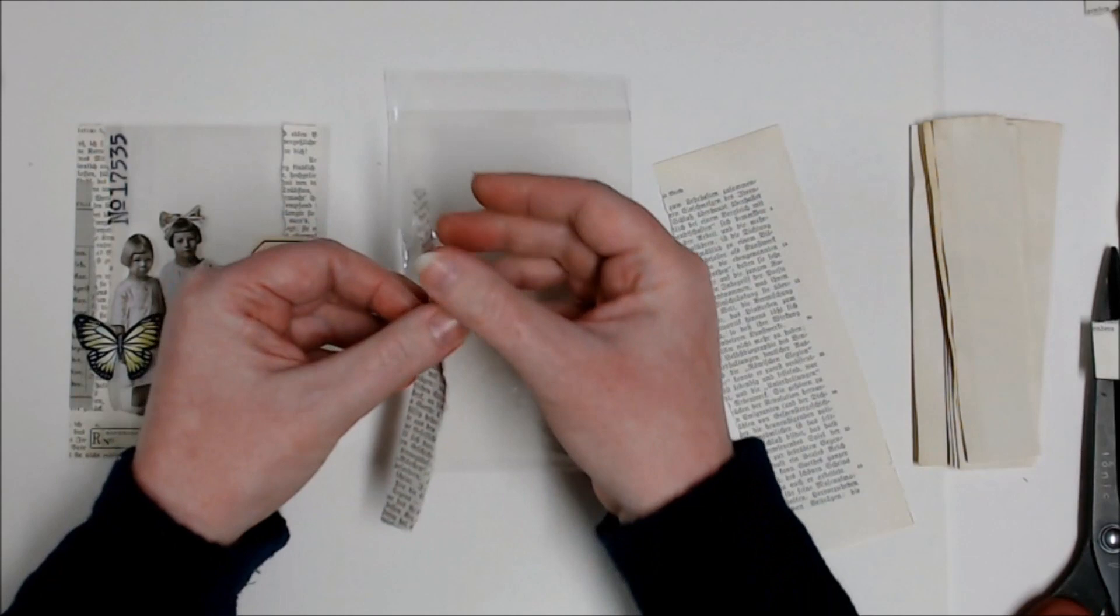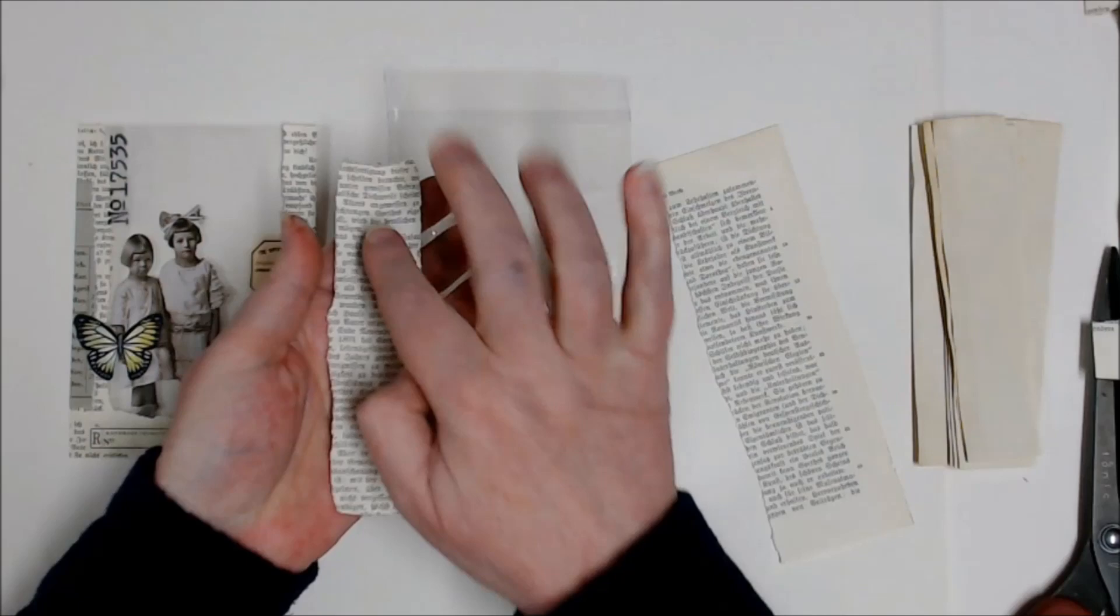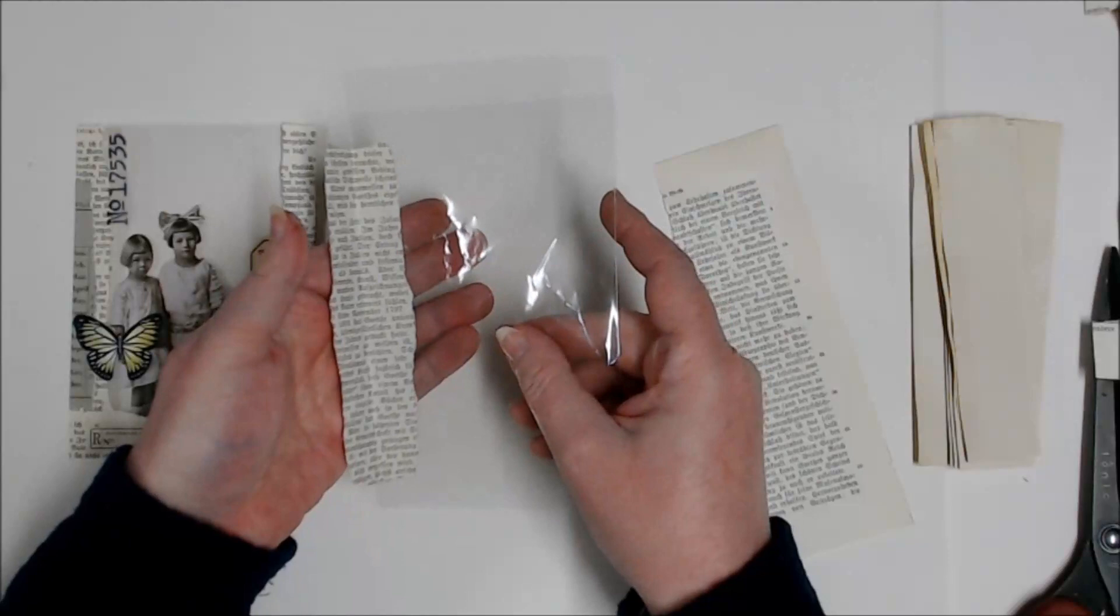So I've got my torn edge here. When I open it up, I've got this shape and I've got a crease in the middle here which will become the edge of my plastic bag.